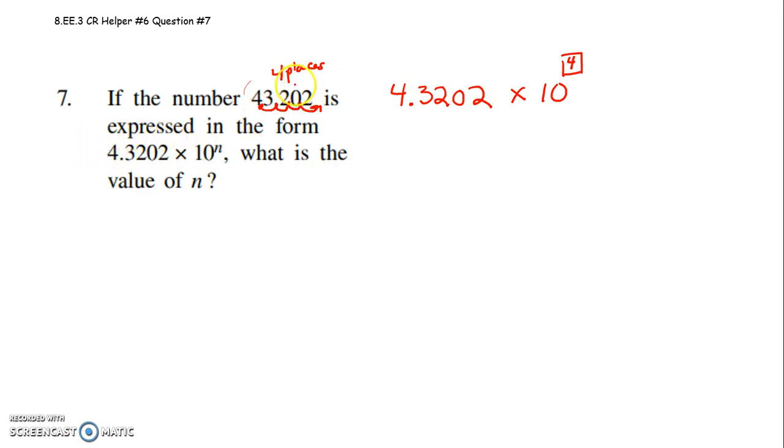So this number, 43,202, written in scientific notation, is 4.3202 times 10 to the 4th power. And I just want to know what would that exponent on 10 be. That exponent on 10 would be a 4.